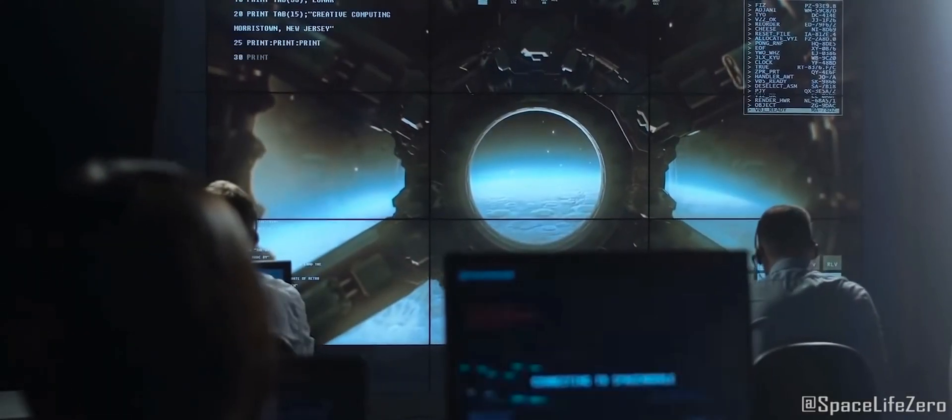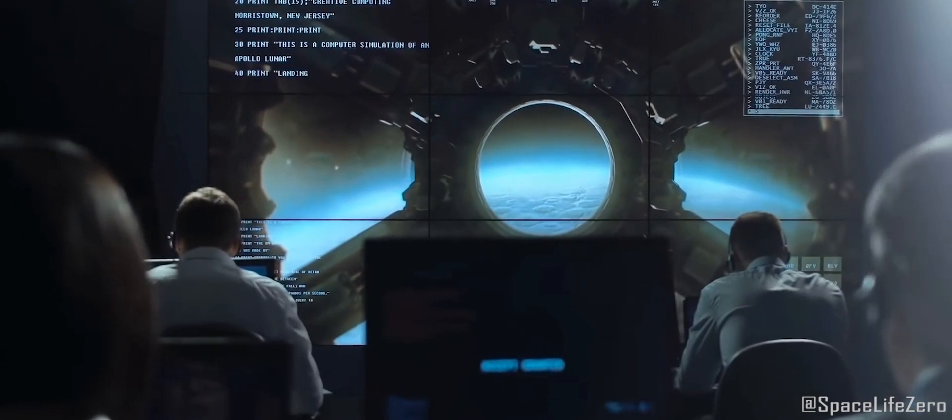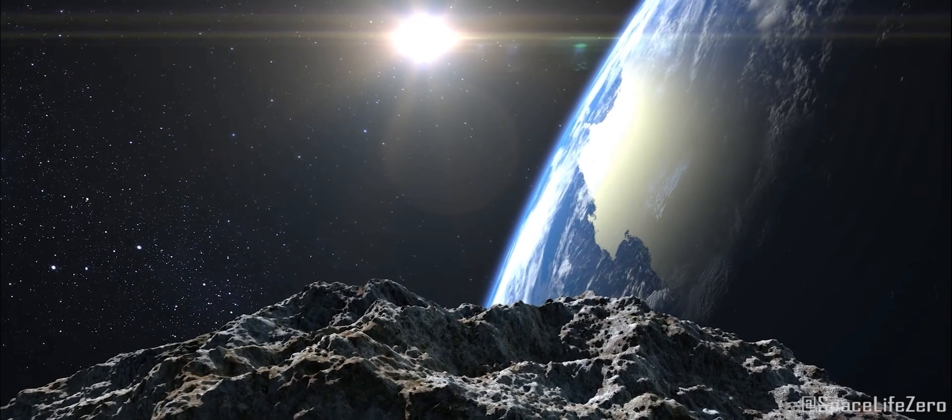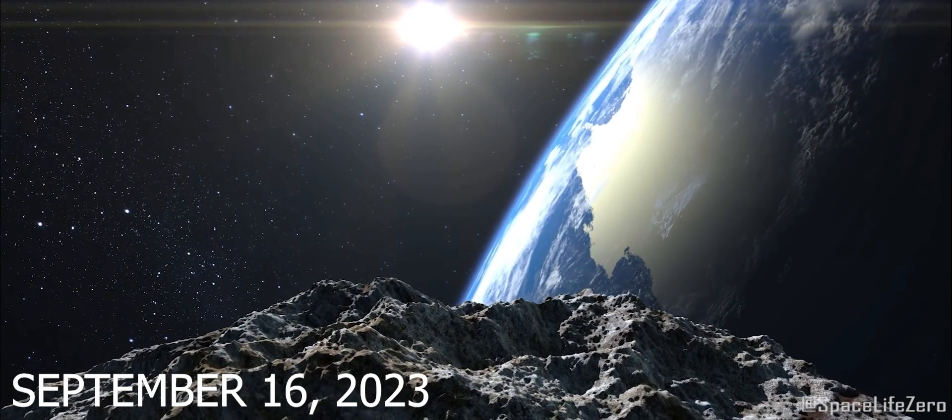According to information received from NASA's Jet Propulsion Laboratory, two asteroids are hurtling at very high speed towards our planet on September 16, 2023.